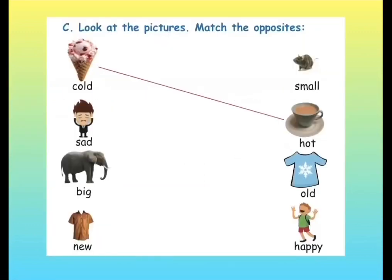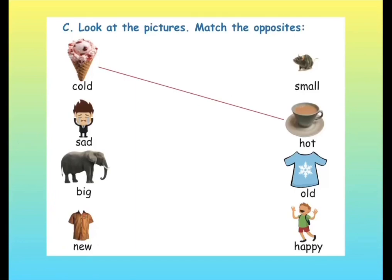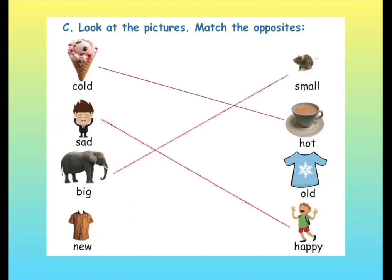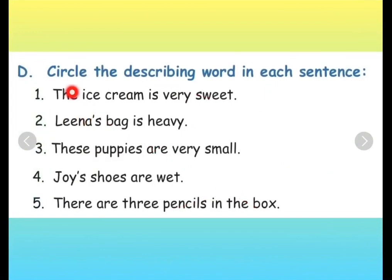And red, small, round, faithful, tall are their adjectives. Very good! Let us move forward to the next exercise. Look at the pictures and match the opposites. Some pictures are given on the left and some on the right. We have to match each with the correct opposite. The first one is cold, and the opposite of cold is hot. The second one is sad, and the opposite of sad is happy. The opposite of big is small. And the next one: new - the opposite of new is old.